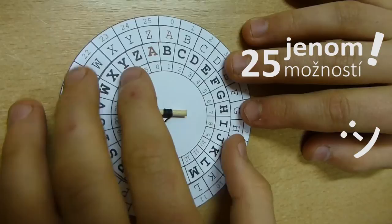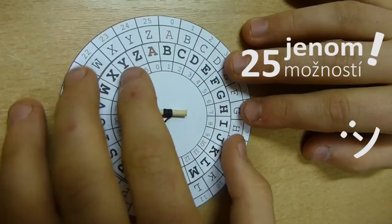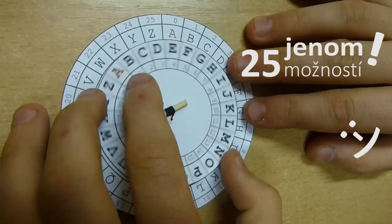Ano, domysleli jste si to správně. Stačí nám vyzkoušet všech 25 možných pootočení a vždy si zkusit vyluštit třeba jen prvních 5 znaků, abychom viděli, jestli dávají smysl.